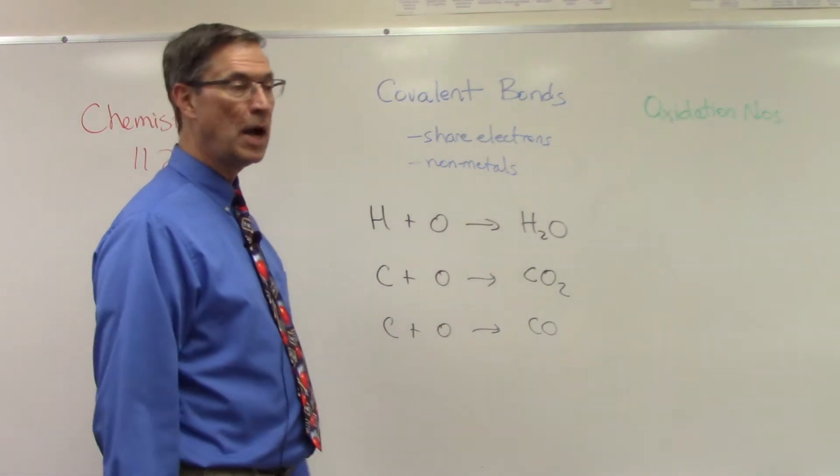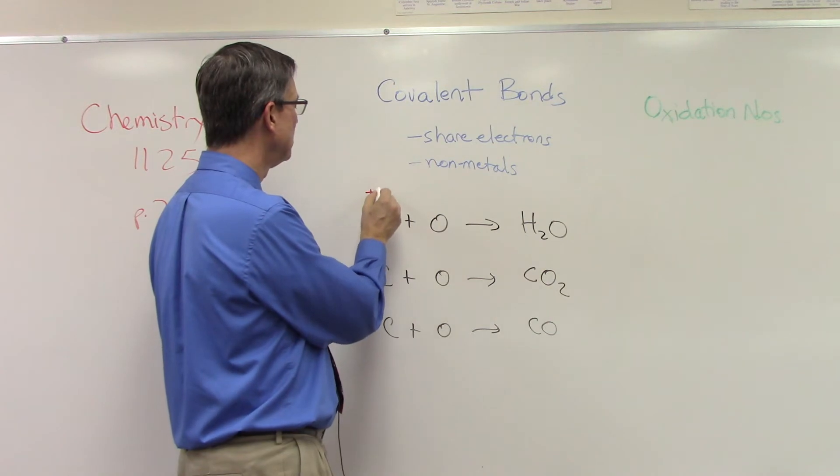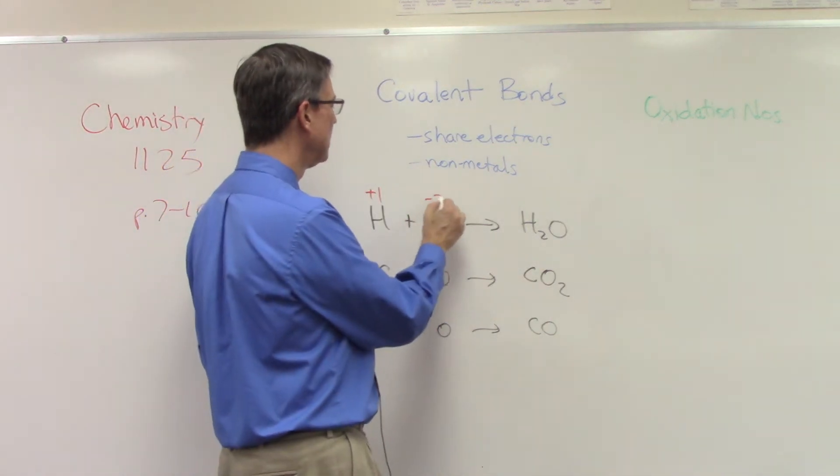According to the periodic table, the oxidation number for hydrogen, absolutely positively, is positive one. Always. Oxygen is always negative two. Always.